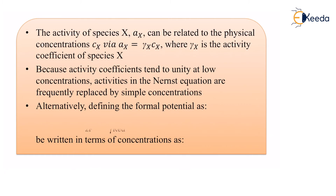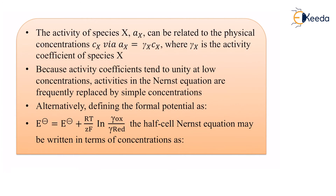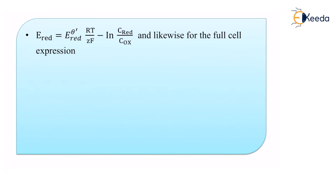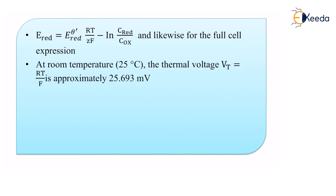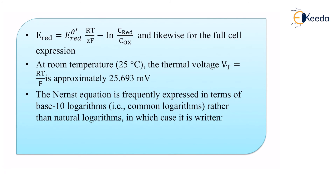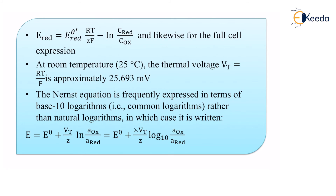Alternatively, defining the formal potential as E° equals E° plus RT/ZF times ln(γ-oxidation over γ-reduction), the half cell Nernst equation may be written in terms of concentrations as: E-reduction equals E°-reduction minus RT/ZF times ln(concentration of reduction over concentration of oxidation). At room temperature — 25°C — the thermal voltage VT equals RT/F is approximately 25.693 millivolts. The Nernst equation is frequently expressed in terms of base-10 logarithms rather than natural logarithms, giving E equals E° plus VT/Z times log(A-oxidation over A-reduction).